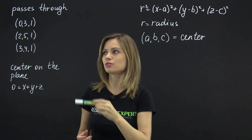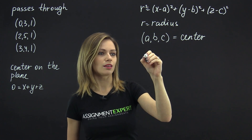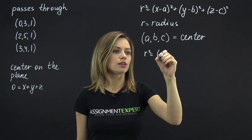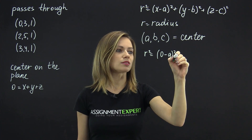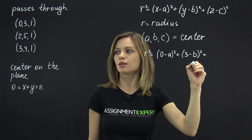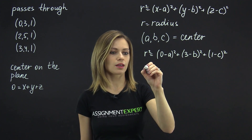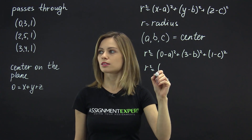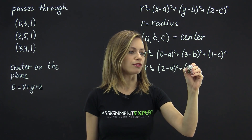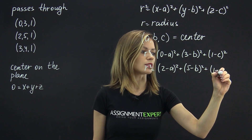We know that our sphere passes through these three points, so let's substitute them into the general equation of a sphere. We have r squared equals (0 minus a) squared plus (3 minus b) squared plus (1 minus c) squared. Also, r squared equals (2 minus a) squared plus (5 minus b) squared plus (1 minus c) squared.